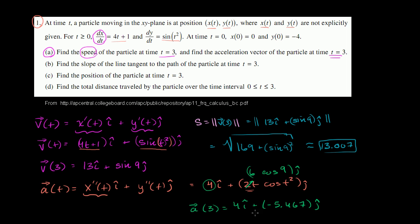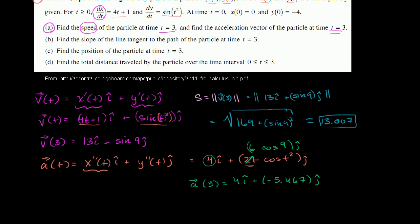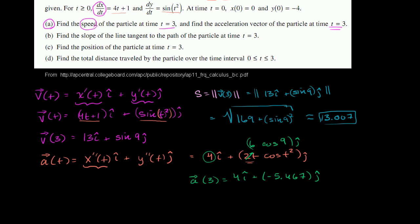I wrote it in engineering notation, which the Advanced Placement exam people wouldn't mind. But you could also write it in parameterized vector notation or ordered pair notation. You could write the acceleration vector at time 3 as the ordered pair 4, negative 5.467. These are really specifying the same thing — 4 is the x component of the vector and negative 5.467 is the y component of the vector.